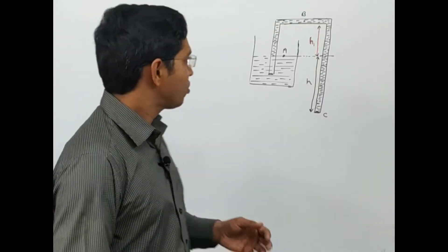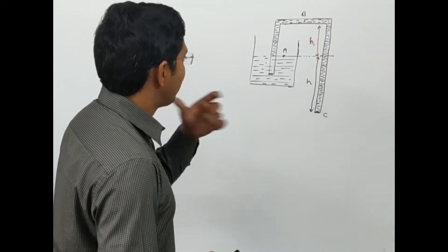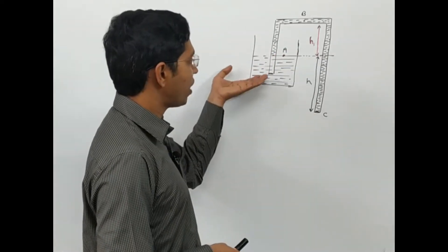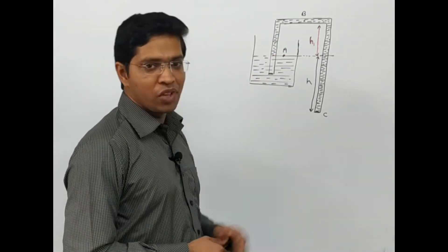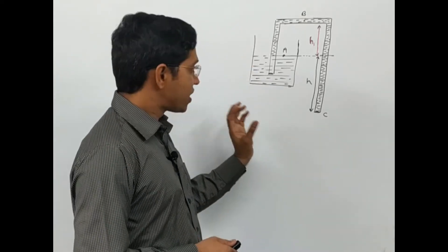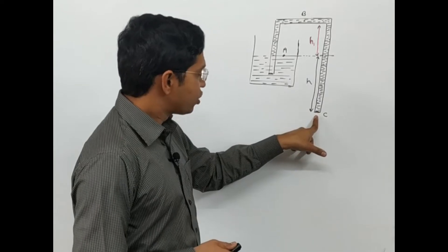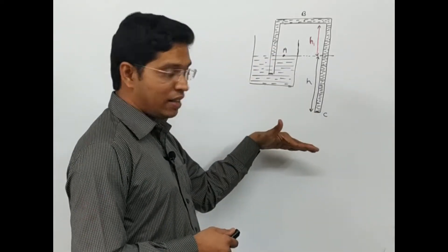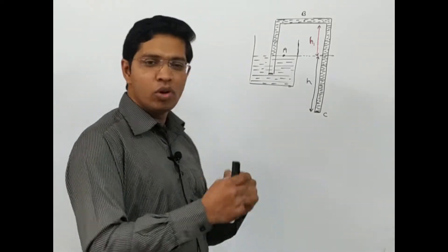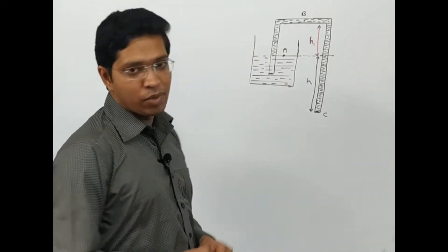Hello everyone. Today we are going to study the siphon. A siphon is a bent tube used to displace water from a higher altitude to a lower altitude. The required condition for a siphon to work is that point C should be at a lower level compared to the water level inside the container. There is one more condition which we will derive using Bernoulli's equation.